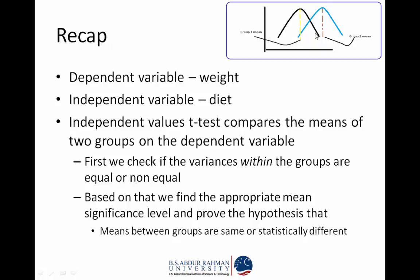Let us recap. The independent samples t-test compares the means of two groups on a dependent variable. We first check whether the variances of the two groups are equal or unequal using Levene's test. Based on that, we find the appropriate significance level and determine whether the means between the groups are the same or different.